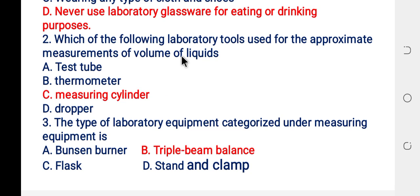A measuring cylinder is a device used to measure the volume of liquid. A test tube is used to hold solutions or for chemical reactions. A dropper is used to transfer a small volume of liquid from one test tube to another.